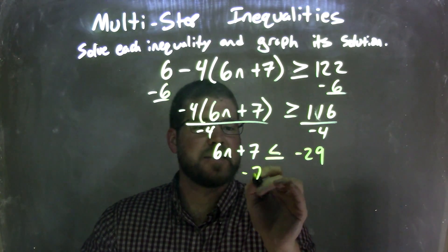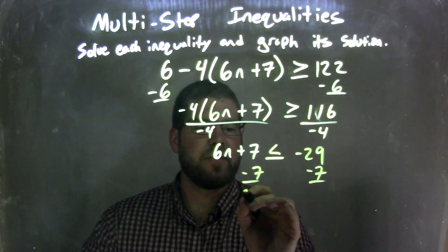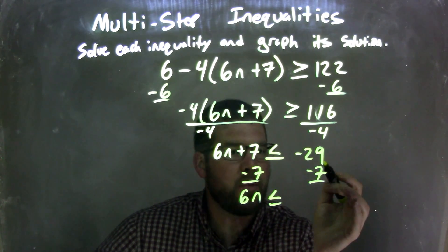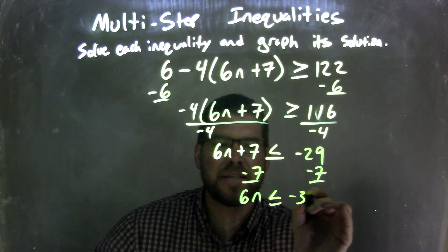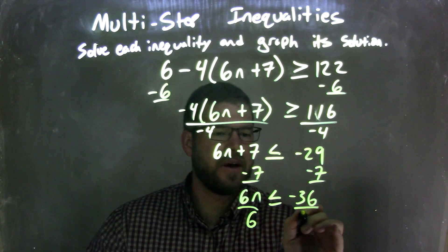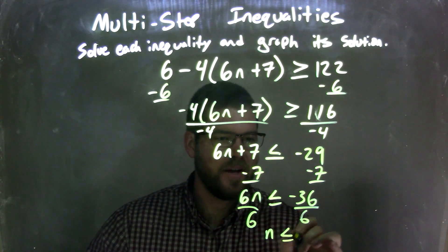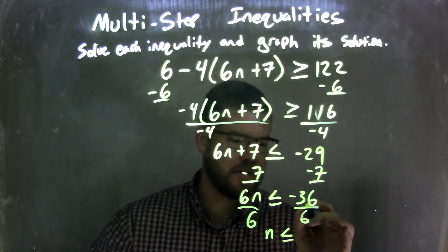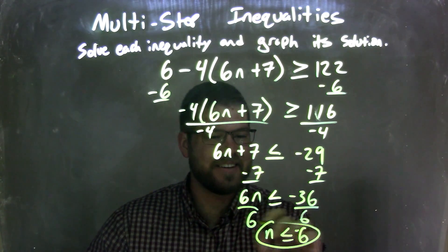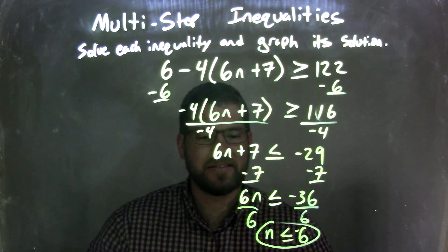So then I need to subtract 7 from both sides. Subtracting 7 from both sides gives me 6n by itself, less than or equal to negative 29 minus 7, which is negative 36. I then divide by 6 on both sides, leaving me with n by itself. n is less than or equal to negative 36 divided by 6, which is negative 6 — not positive 6, negative 6. So there we have it: n is less than or equal to negative 6.